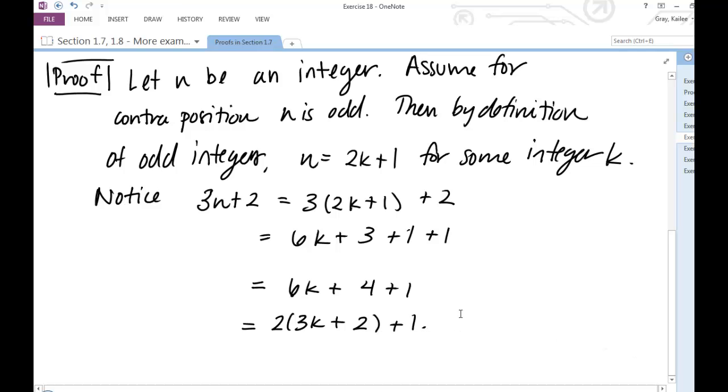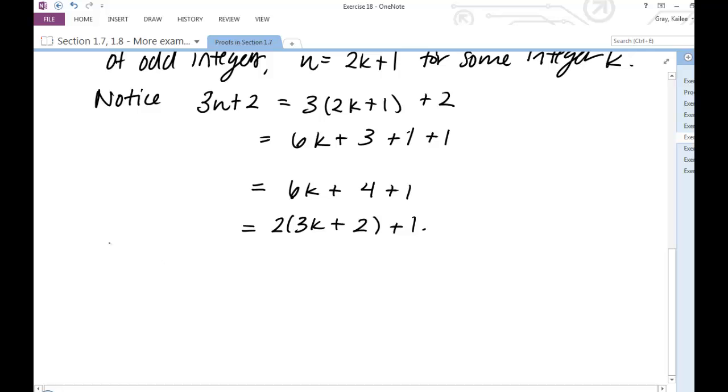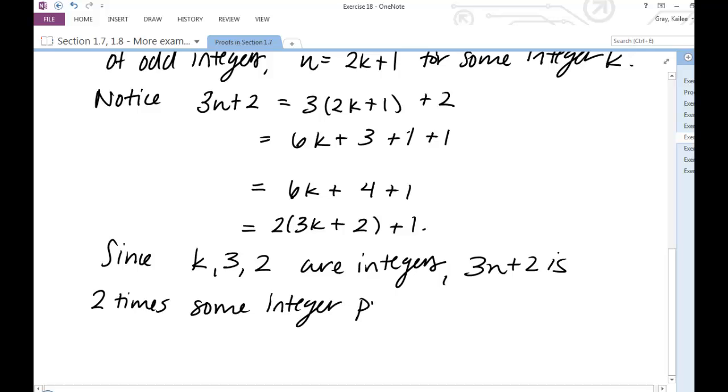Thus, since k, 3, and 2 are integers, 3n plus 2 is 2 times some integer plus 1. Thus, by definition of odd integers, 3n plus 2 is odd.